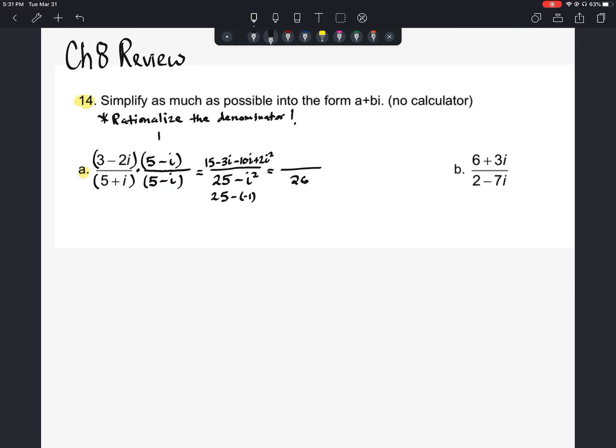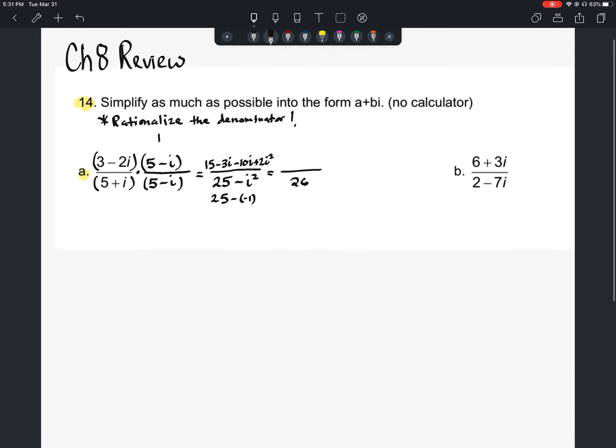So as we look to simplify that, 15 plus 2 times i squared, well 2i squared is going to be like negative 2. So 15 minus 2 is 13. And then negative 3i minus 10i would be negative 13i.